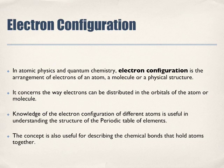So in atomic physics and quantum chemistry, electron configuration is the arrangement of electrons of an atom, a molecule, or physical structure. It concerns the way electrons can be distributed in the orbitals of the atom or molecule. So there's the term orbitals now, but we're talking about it in terms of the actual orbitals that lie within different energy levels, that lie within different subshells.